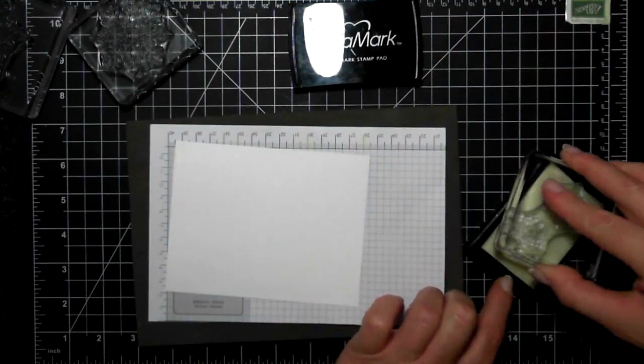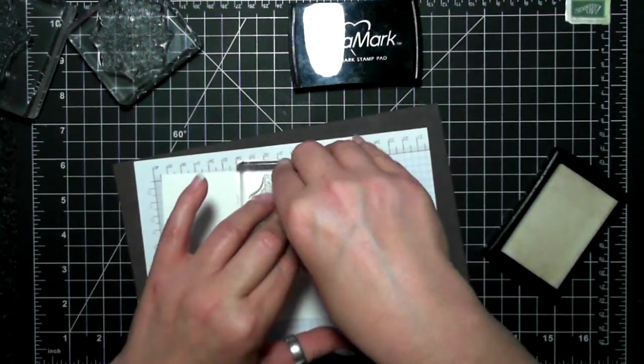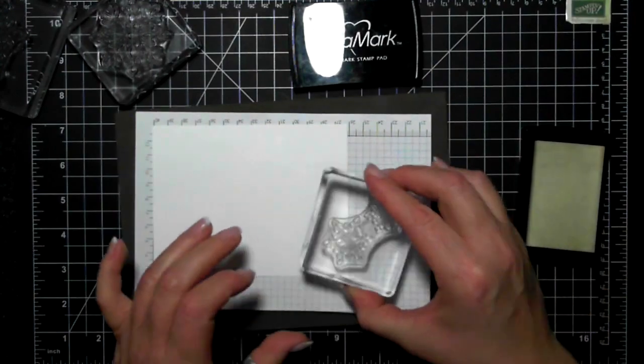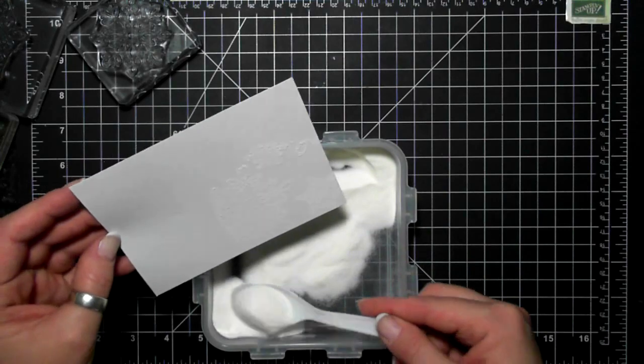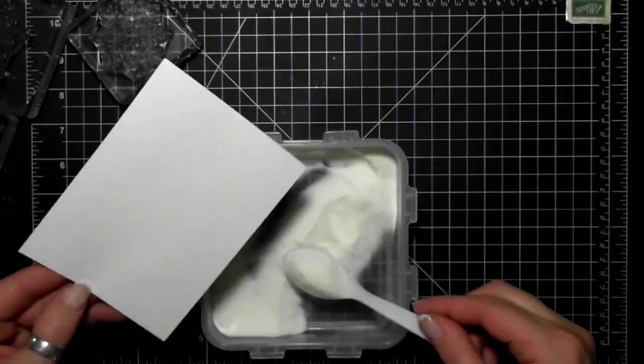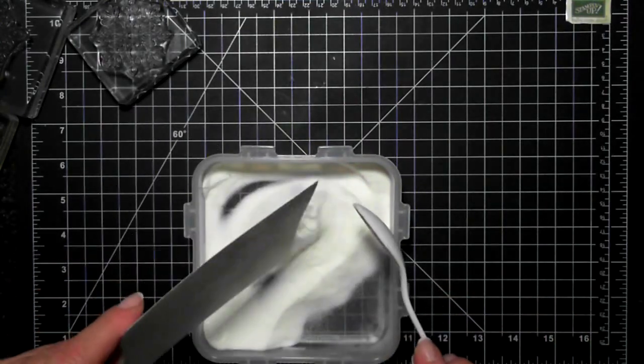You'll see what I do in a second. Basically, I'm going to be heat embossing with clear so that again the white card will show through, and this is going to be another sponging technique.